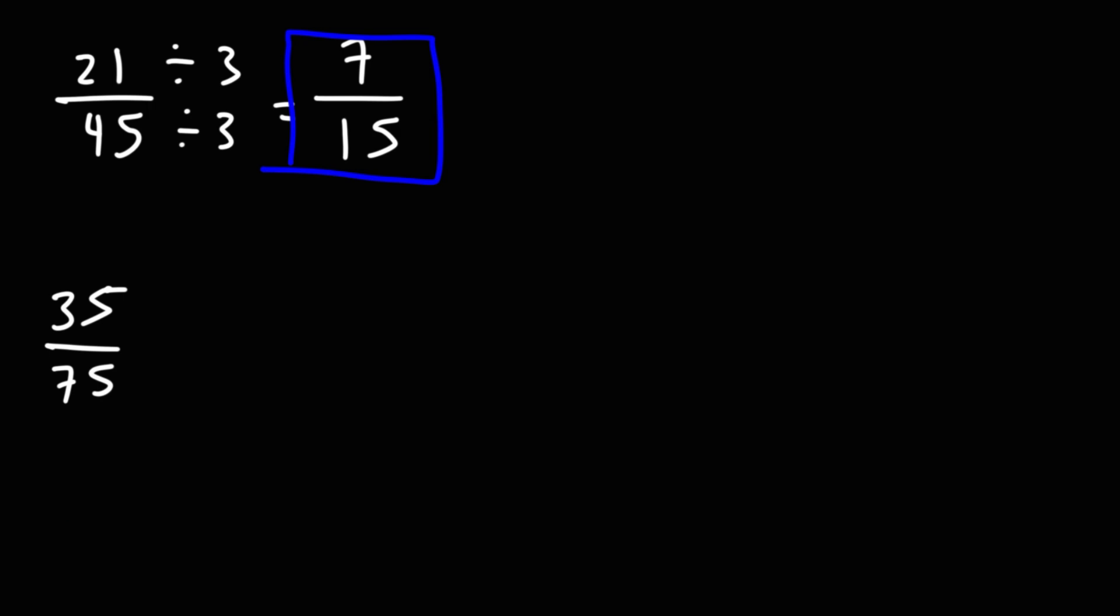Now what about 35 over 75? We can't divide 35 by 3, nor can we divide it by 2 since it's not even. But notice that both numbers end in 5. That tells us that we could divide them by 5. 35 divided by 5 is 7. 75 divided by 5 is 15. So here we get the same answer, 7 over 15.